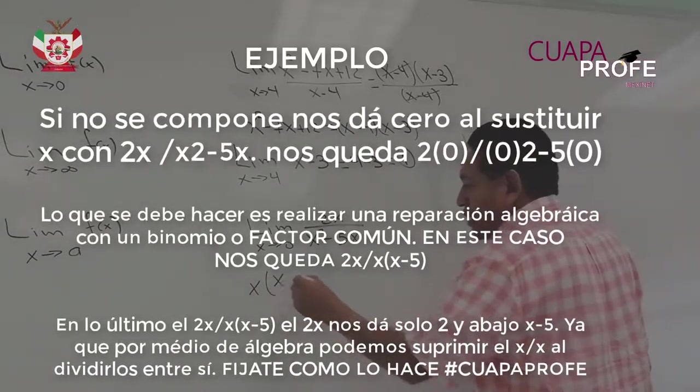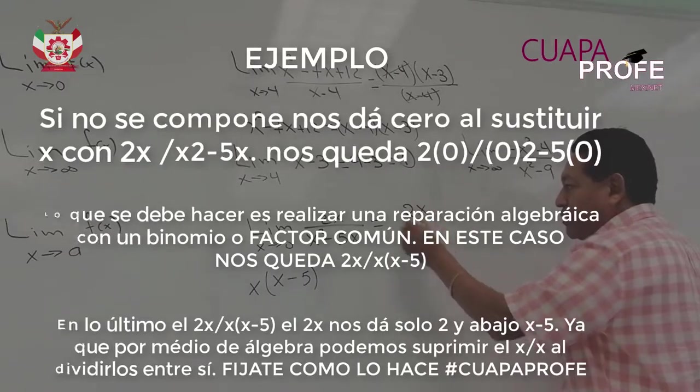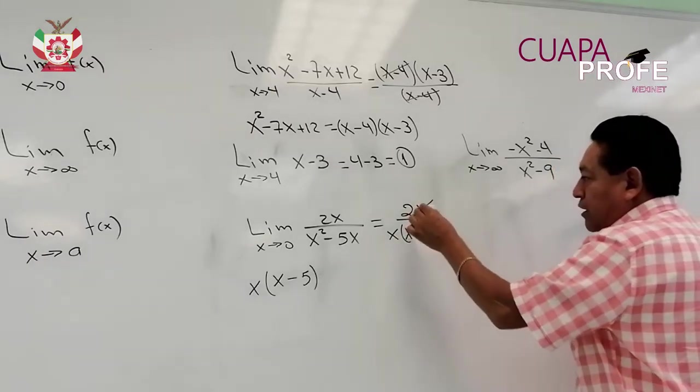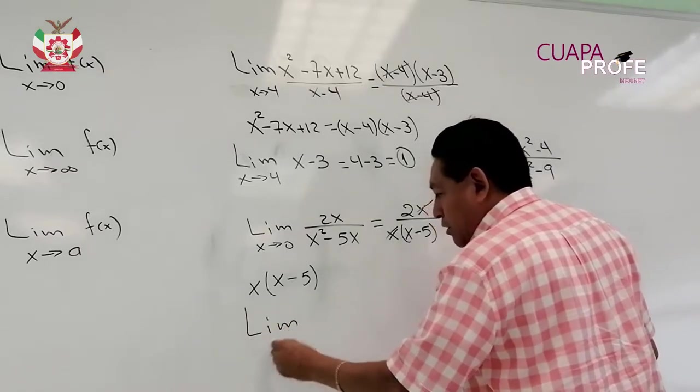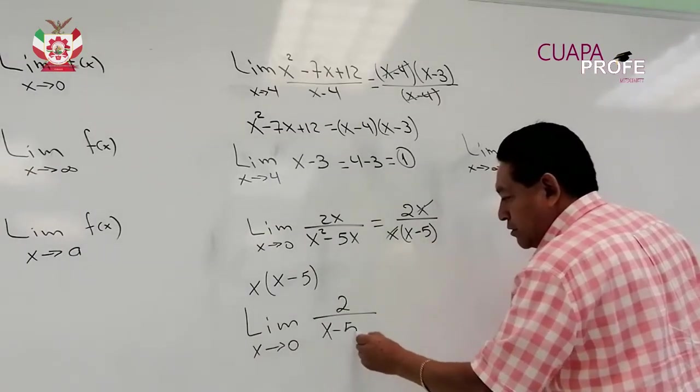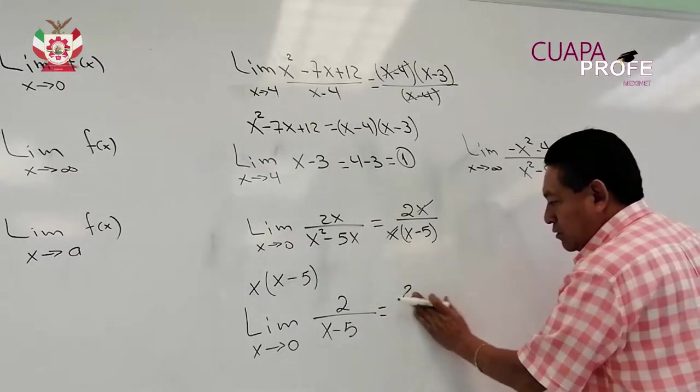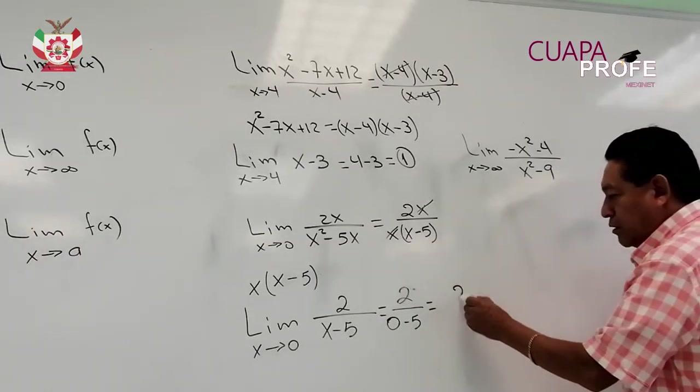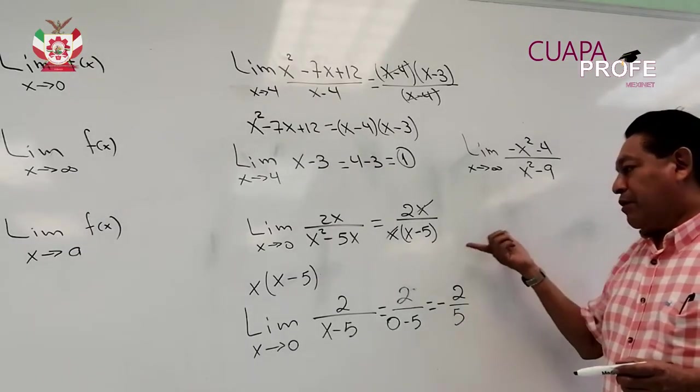Sacamos factor común x y aquí sería x menos 5. De tal forma que ahora nuestra expresión queda escrita como 2x sobre x que multiplica a x menos 5. Como esta x está siendo dividida por esta otra, entonces simplificamos, me da 1. Y el límite que ahora buscamos, cuando x tiende a 0, será 2 entre x menos 5. Y esto será igual, al sustituir en lugar de x escribimos 0, me queda 2 entre 0 menos 5, y esto será igual a 2 entre 5 con número negativo. Como podemos ver, también existe y lo podemos transformar. A este tipo de límite se le conoce como un límite removible.